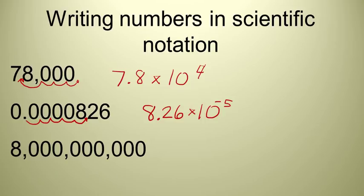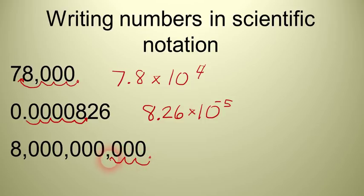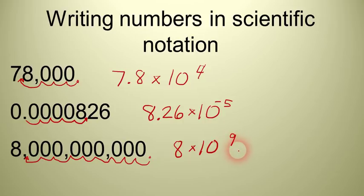Here's another example: 8 followed by 9 zeros. In some parts of the world they'd read that as 8,000 million; in the United States we read that as 8 billion. We take the understood decimal point, which is right there, and move it so that the mantissa is in between 1 and 10. We move it to the left 9 places. The answer is 8 times 10 to the 9th. Is it positive or negative 9th? This is a big number, so it's positive 9.